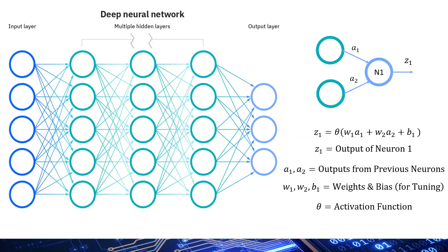Deep learning uses artificial neurons arranged in layouts called deep neural networks. Each neuron takes input values, multiplies them by certain weights, adds a bias, and passes them through an activation function to produce an output. The weights and biases are tunable parameters that can run into billions or even trillions for complex real-life cases.